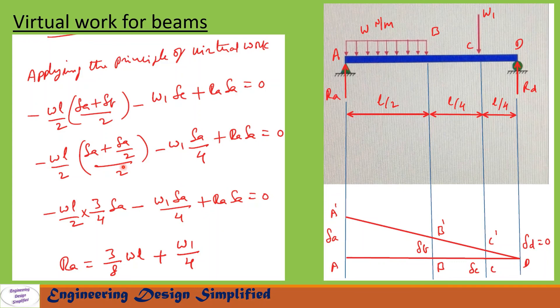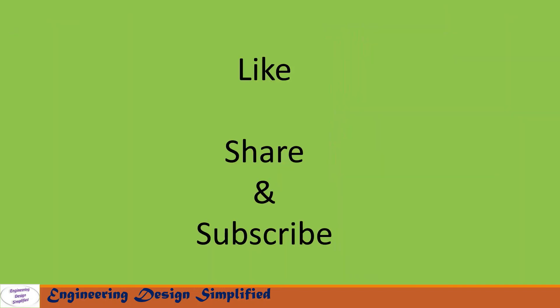Now let us write the virtual work equation: −w·(L/2) × (average displacement = (δa + δb)/2) − W1·δc + Ra·δa = 0. Substituting δb = δa/2 and δc = δa/4 and simplifying, we get the reaction at A: Ra = (3/8)wL + W1/4. That's all for today's video. If you like this content, please like, share, and subscribe. Thanks for watching.